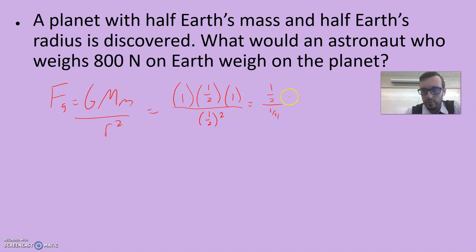Half the Earth's mass. The mass of the person doesn't change. And then half of the radius. Now, half of the radius, this is the only thing that's a little tricky about this one, is one-half squared is one over four, and one-half divided by one over four gives us two. So 800 Newtons times two, or 1,600 Newtons.